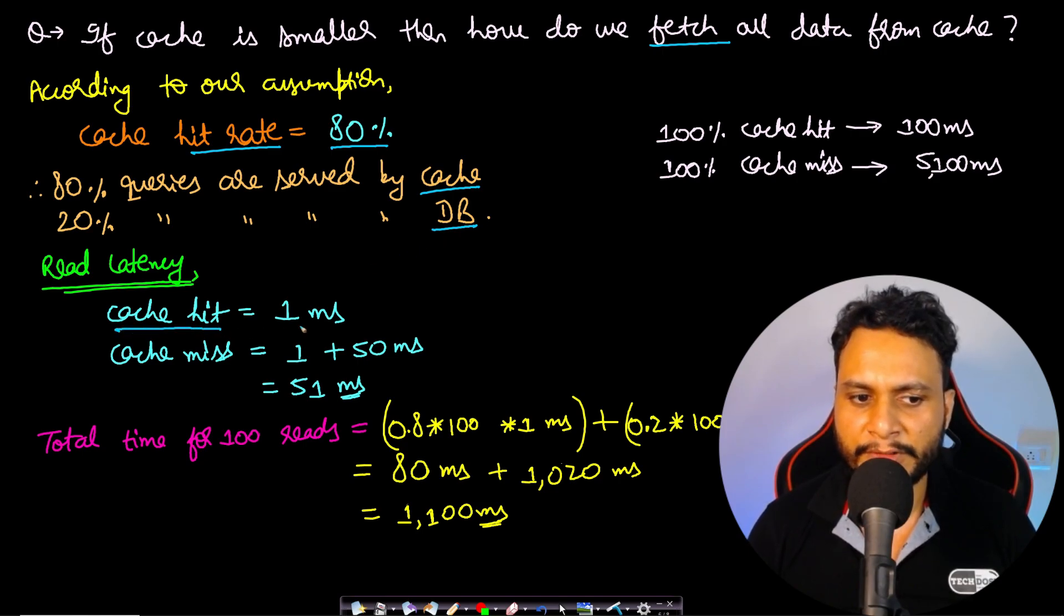We know that the read latency for the cache hit is 1 ms, that we had assumed on the previous slide. What will be the read latency for cache miss? 1 ms for checking if the data is present in the cache and then 50 ms for the database read, and that adds up to 51 ms.